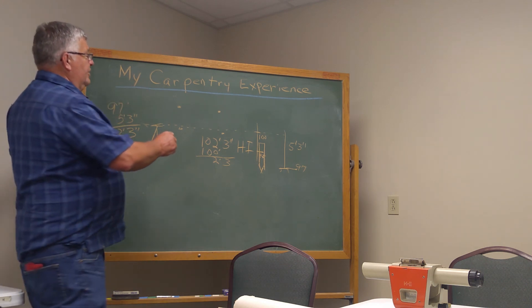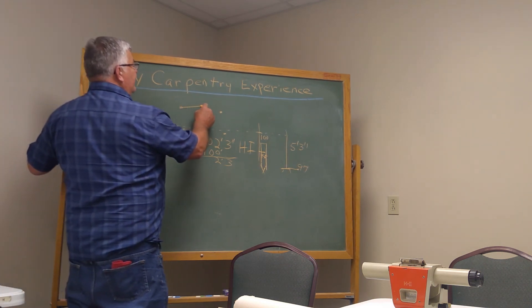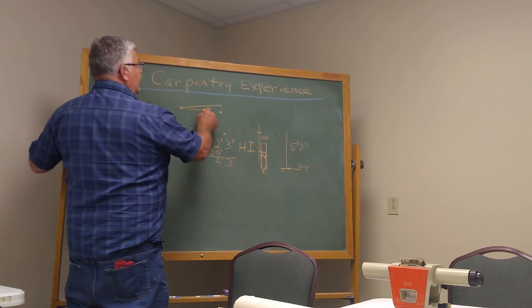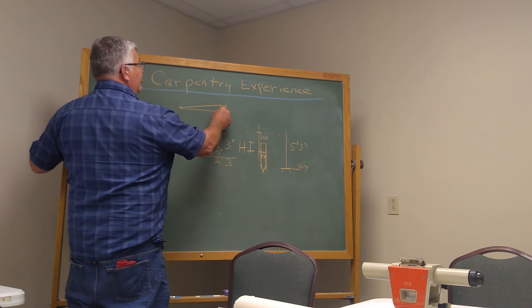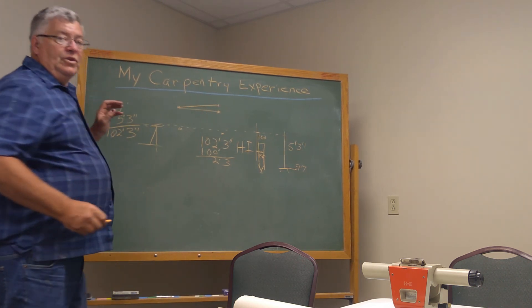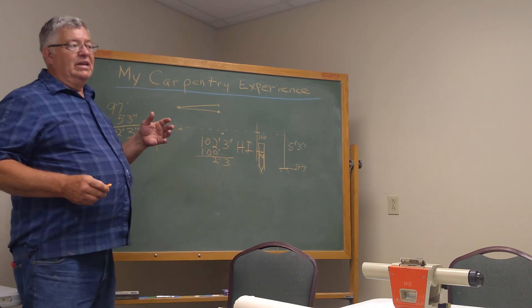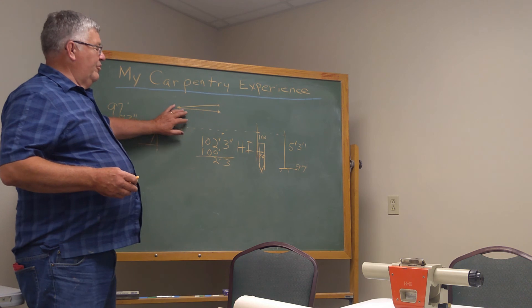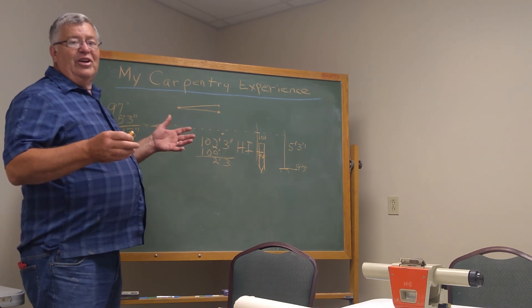Because if I don't have them level, if say I'm measuring fifty feet across here and I'm out of level, this line would be longer than the level line. So, everything has to be correct. You can't square things up. If your measurements are off, you're not square.